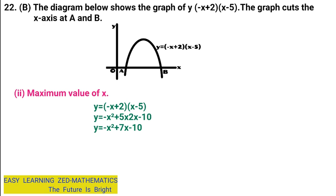So the expression is negative x squared plus 7x minus 10. Now I'm going to write the formula to find the maximum value of y, which is y equals (4ac minus b squared) over 4a. I'm going to get the values of the letters from that expression: a is the coefficient of negative x squared, b is 7, and c is negative 10.